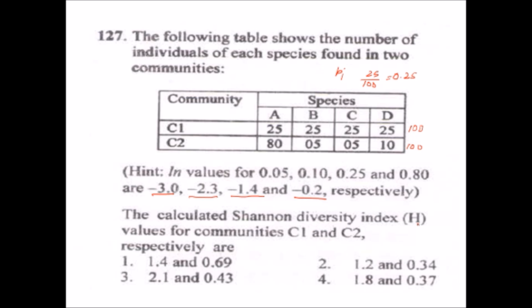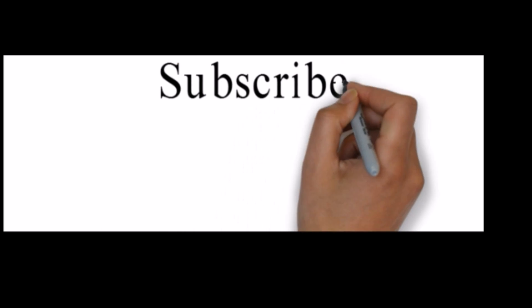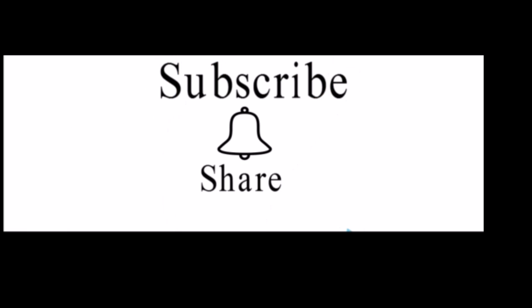So the answers are 1.4 for community C1 and 0.69 for community C2. Such questions are frequently asked in competitive life sciences examinations. Since this topic generally does not carry negative marks, it is better to understand and prepare these questions to score more. In the next video I will discuss more numerical formula-based topics. Don't forget to subscribe to my channel Be Yourself, share the video, and click the bell icon to get notifications when I upload new videos.